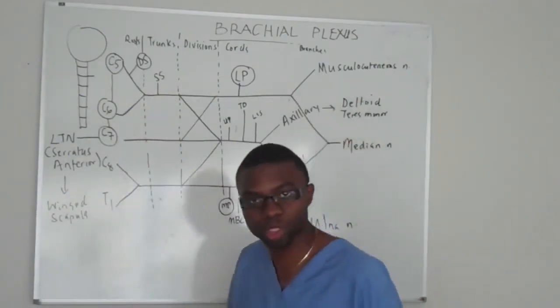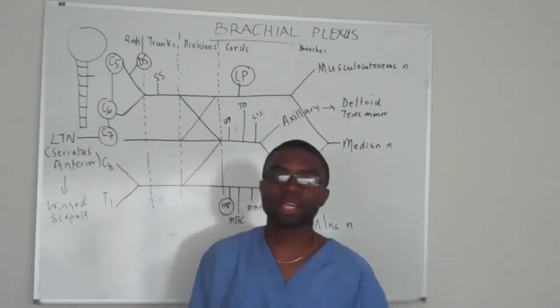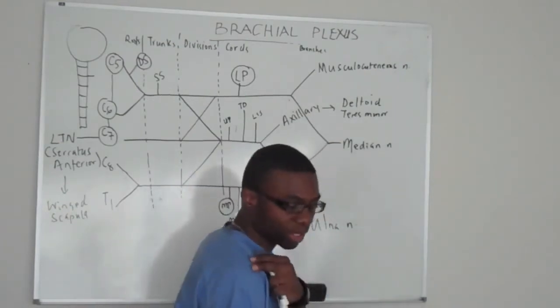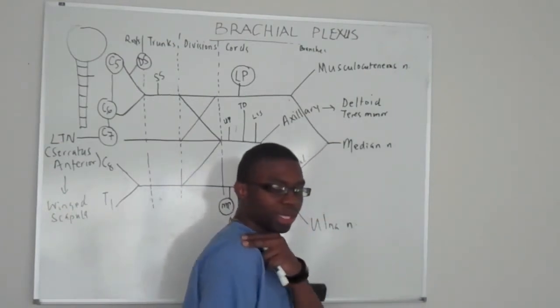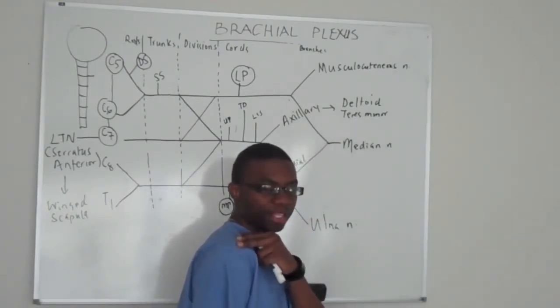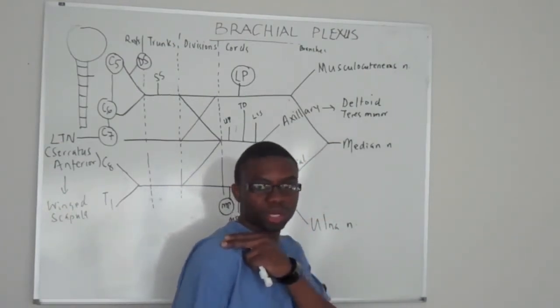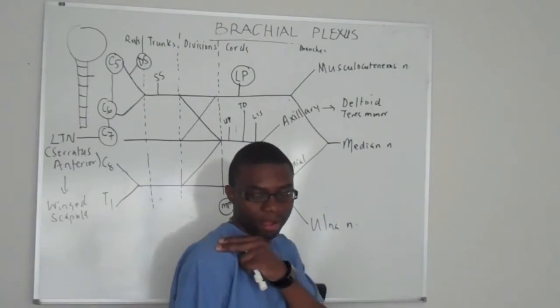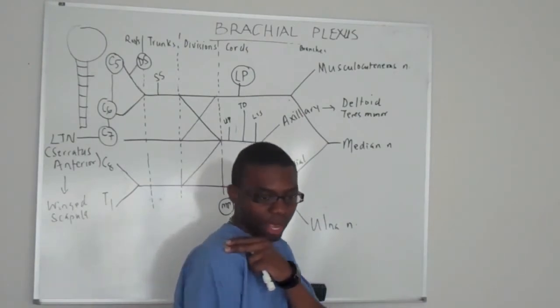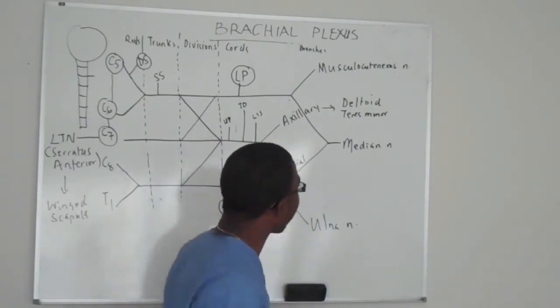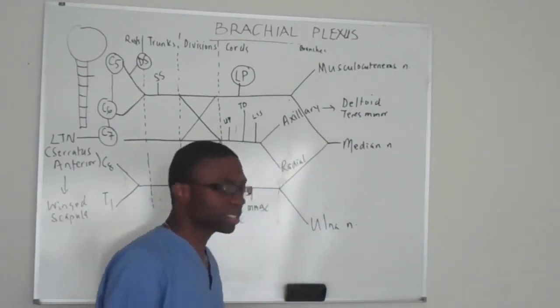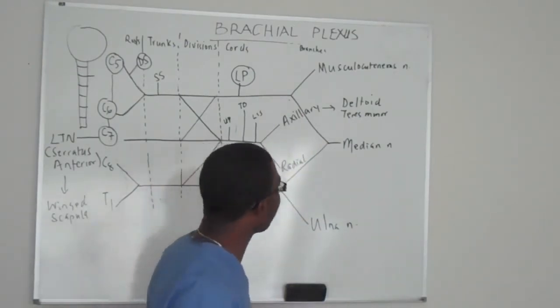Now, the axillary nerve again — teres minor is the muscle that allows you to physically externally rotate. Any clinical applications? Not at the moment.